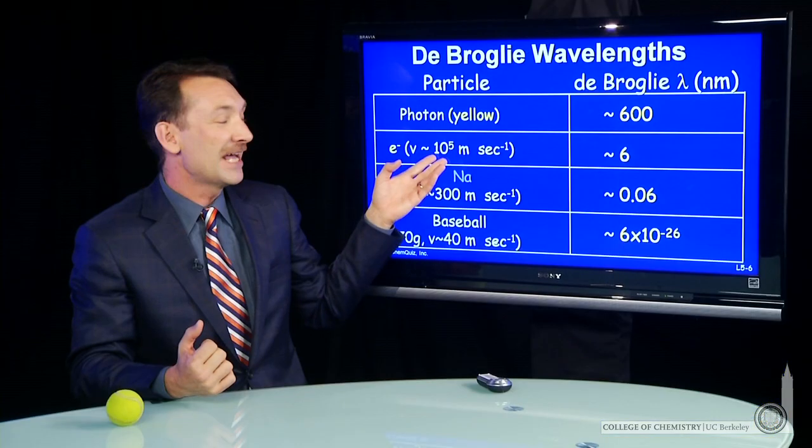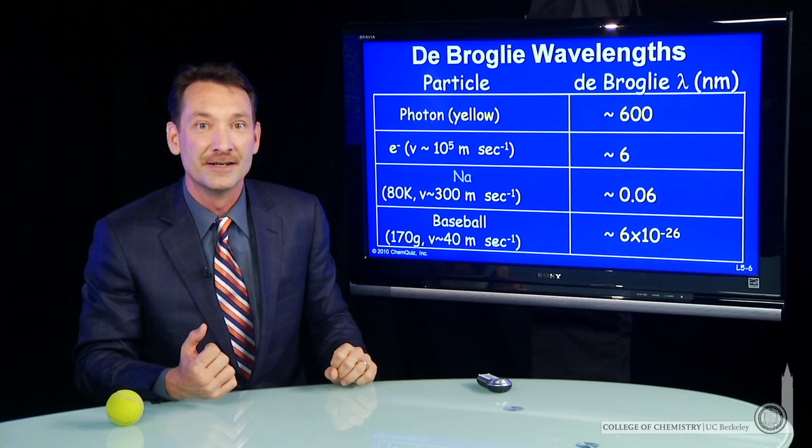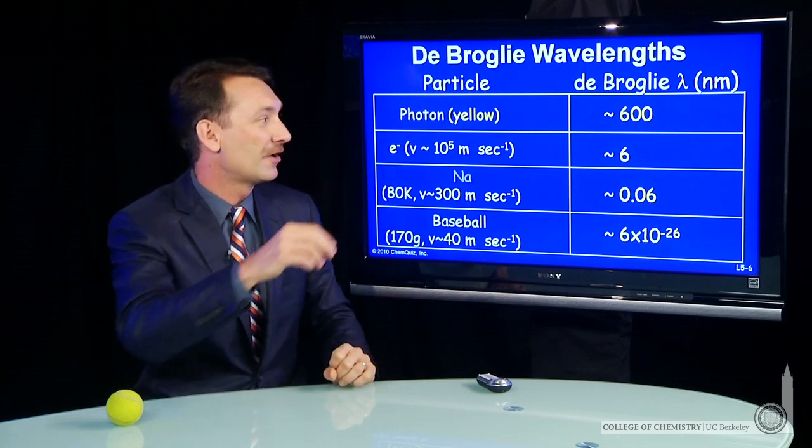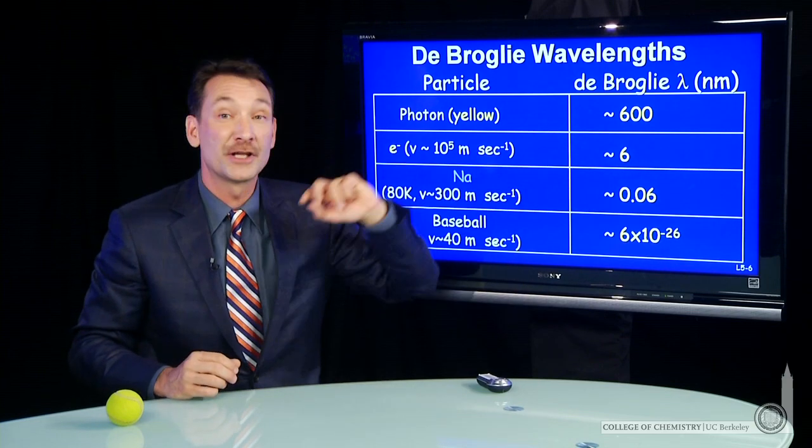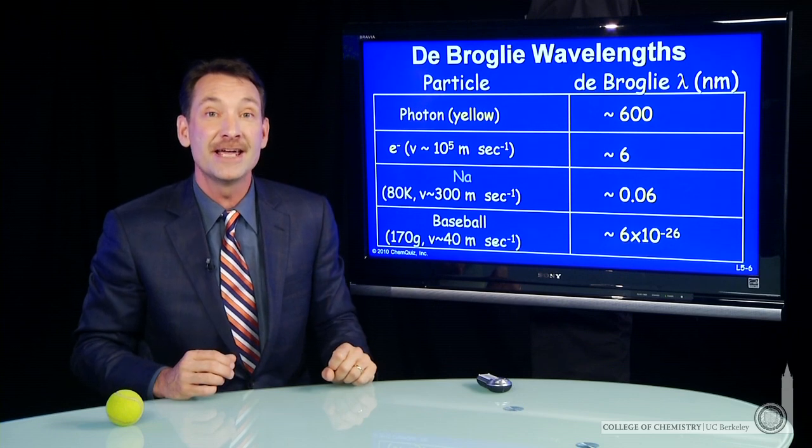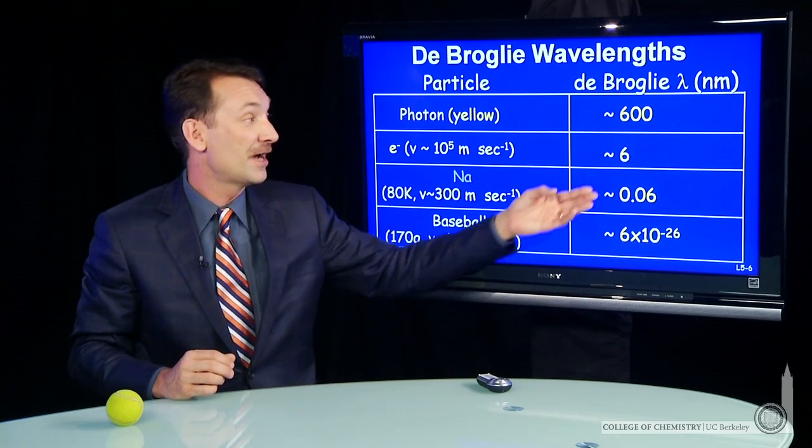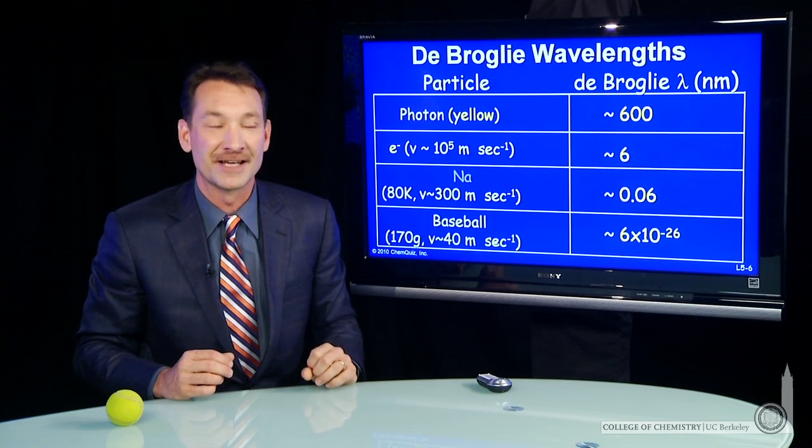How about an electron moving at 10 to the fifth meters per second? An electron just zipping along in space. You can use the de Broglie relationship to find a de Broglie wavelength of around 6 nanometers for that electron.